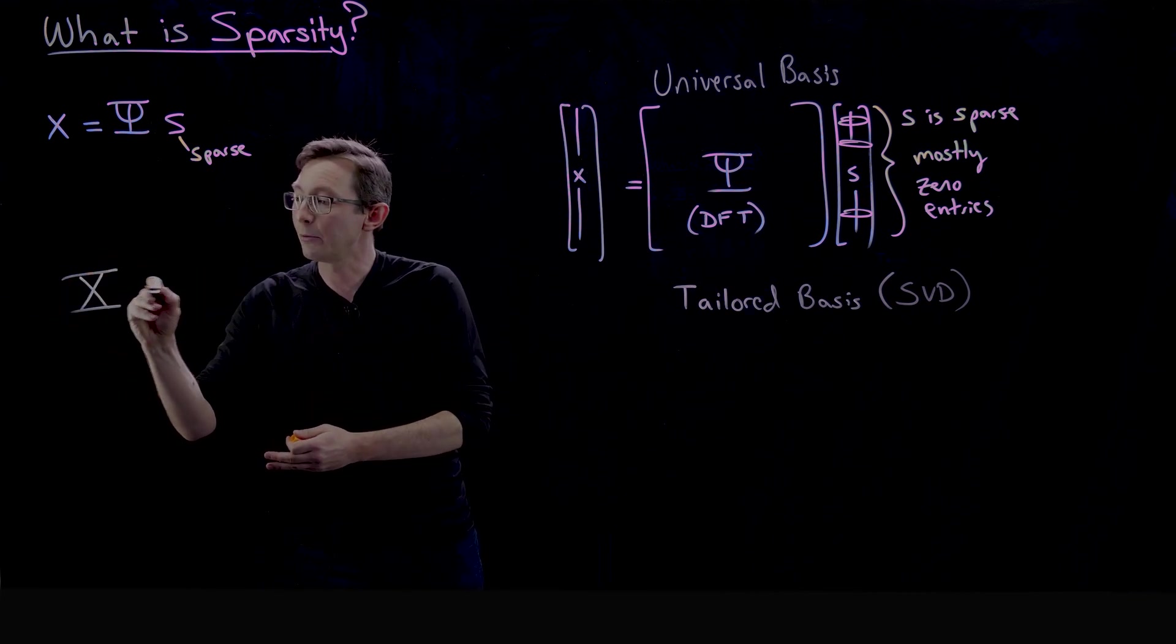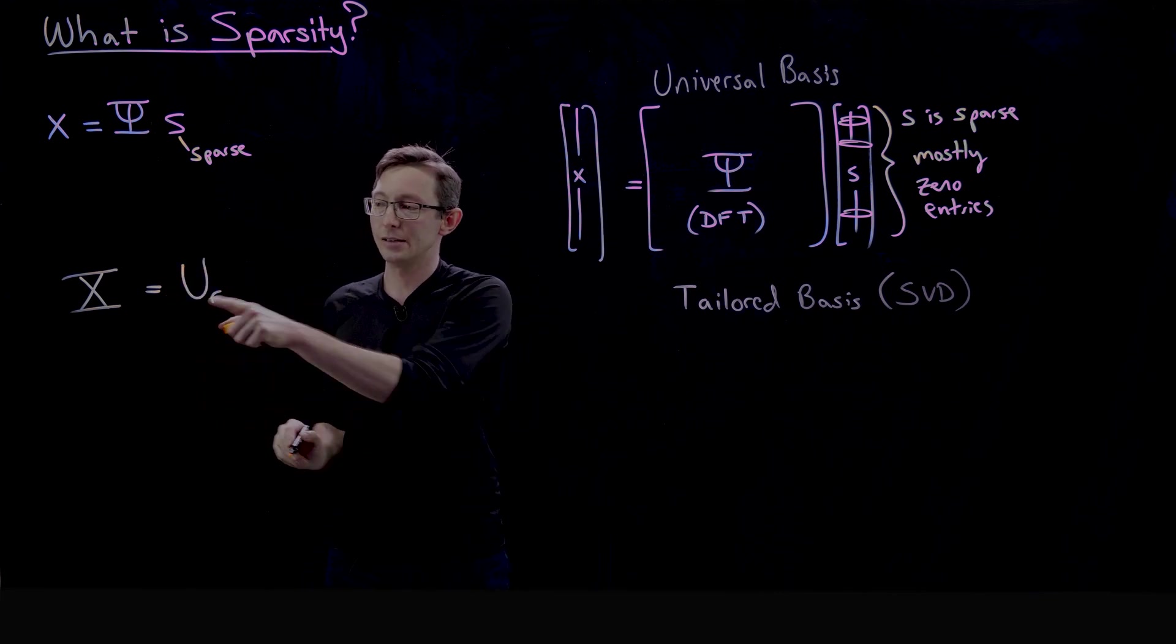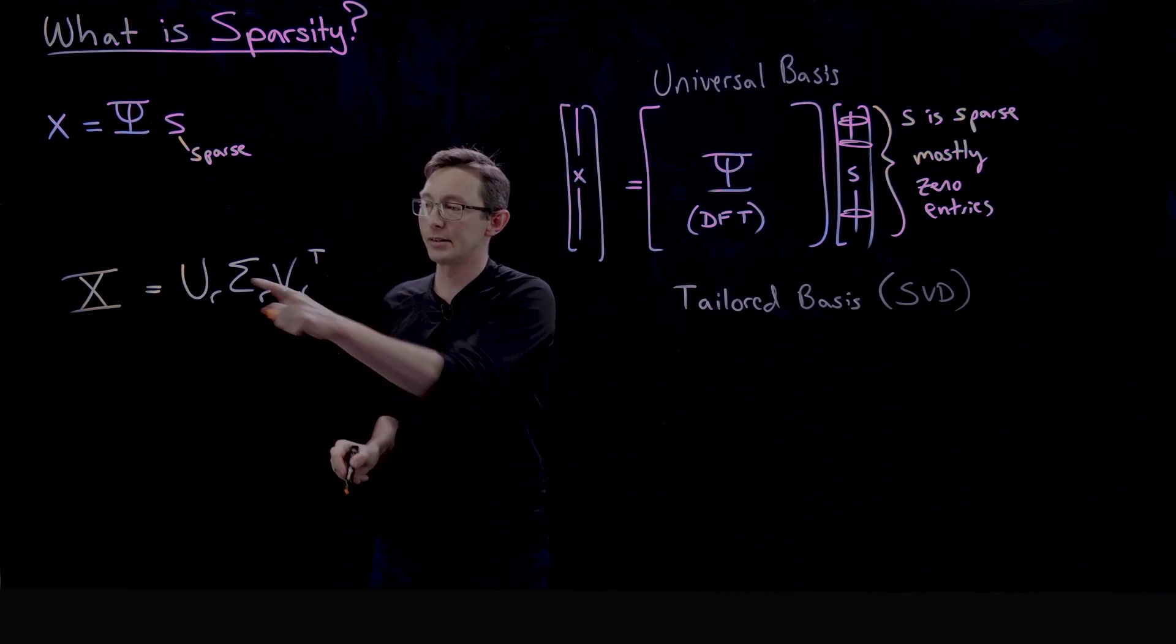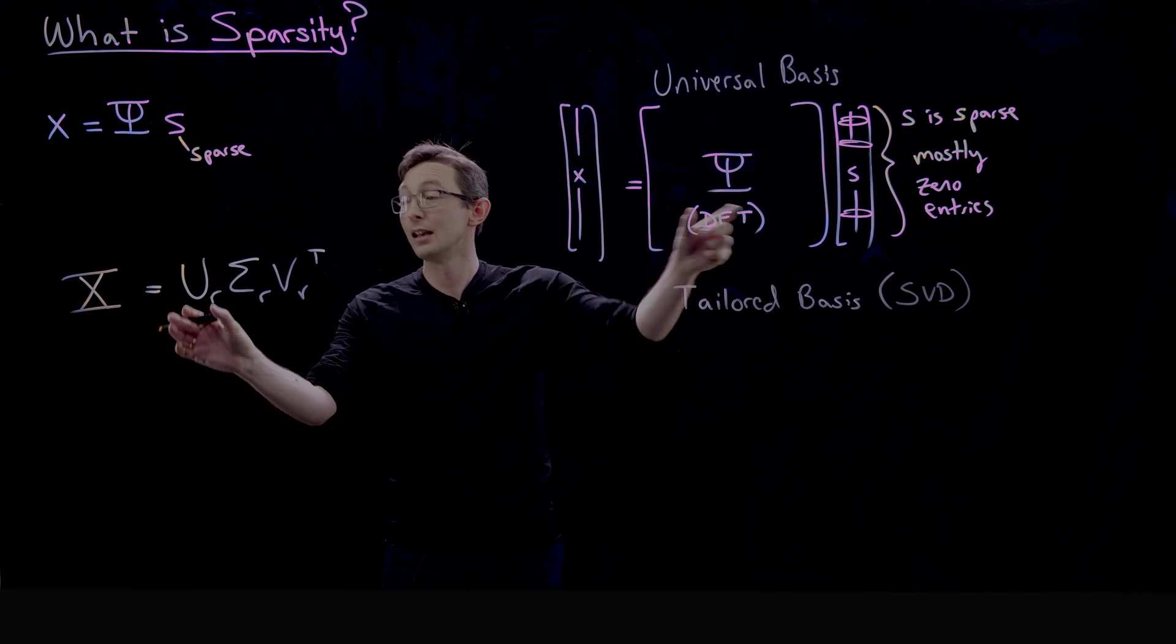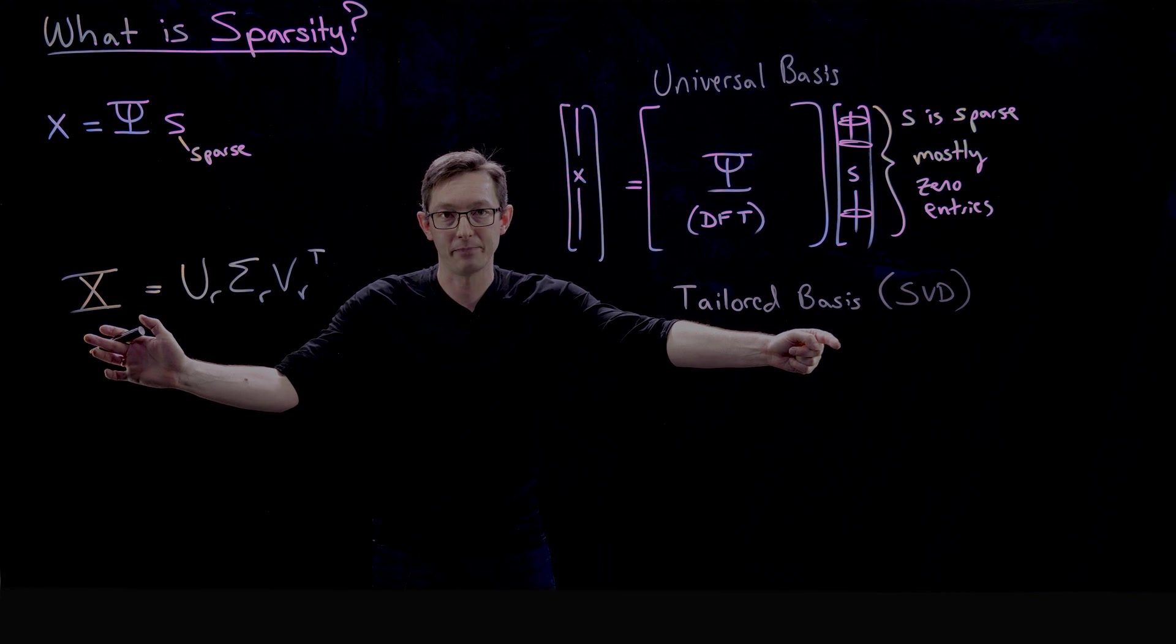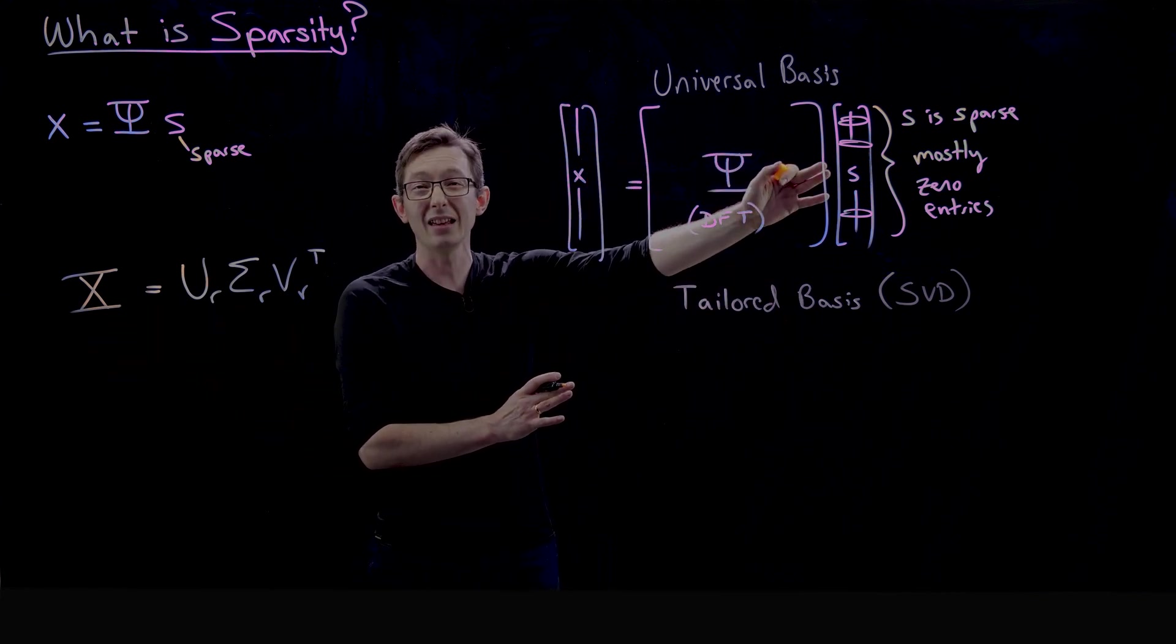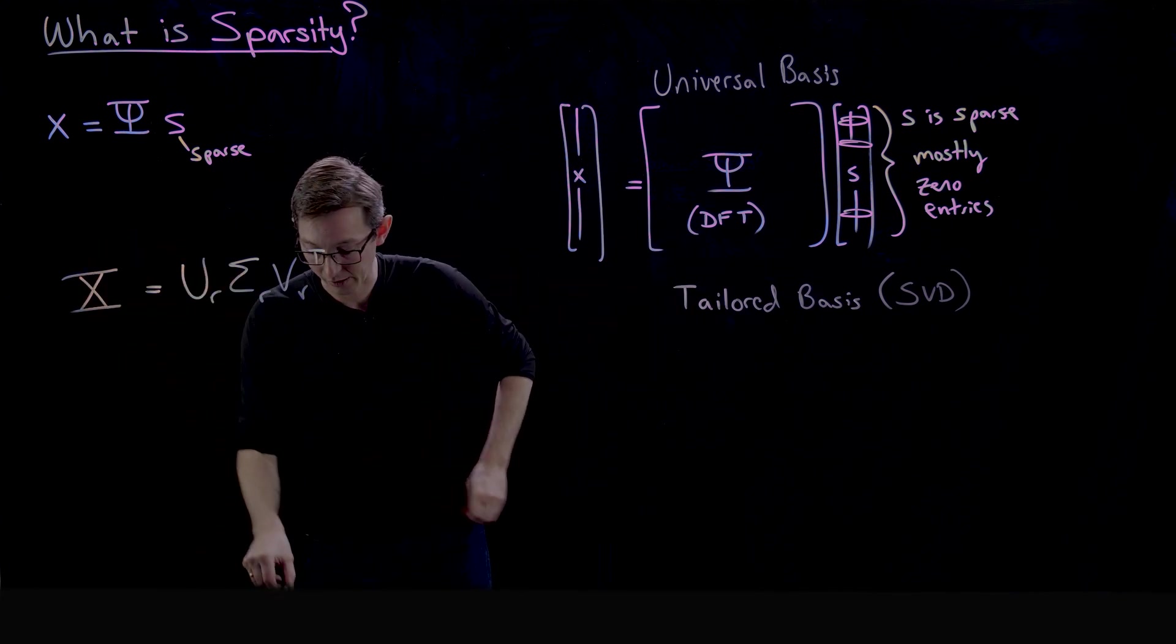And then what I do is I run the SVD and I get a reduced basis: U_R times Σ_R times V_R transpose, where now this U_R is a library, a basis that I can use to represent human faces. This is what we call a tailored basis. So up here the Fourier transform is a universal basis—we can encode anything—but we could also use a tailored basis like the SVD.